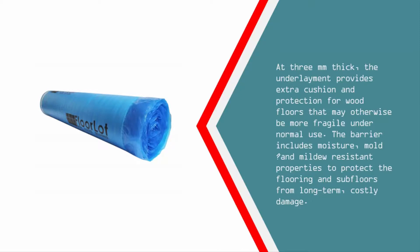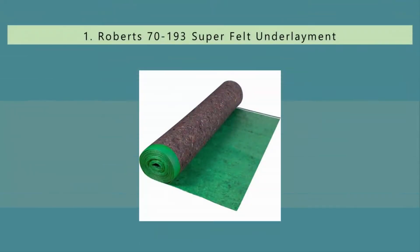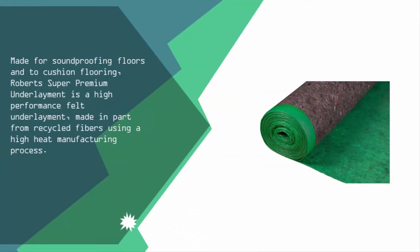And coming in at number one of our list, made for soundproofing floors and to cushion flooring, Roberts Super Premium Underlayment is a high-performance felt underlayment made in part from recycled fibers using